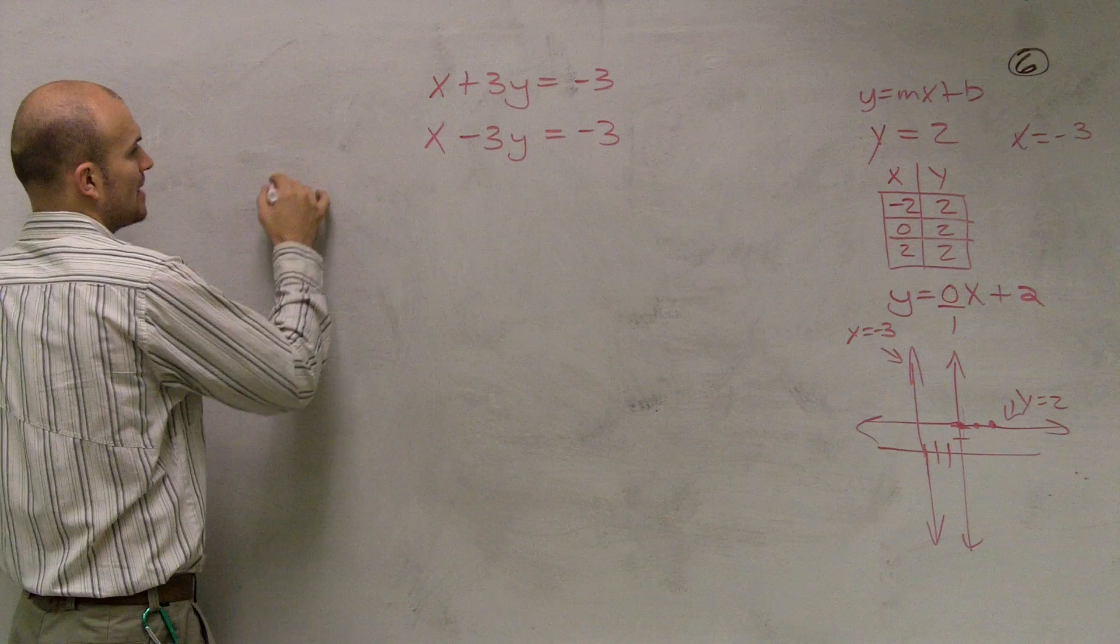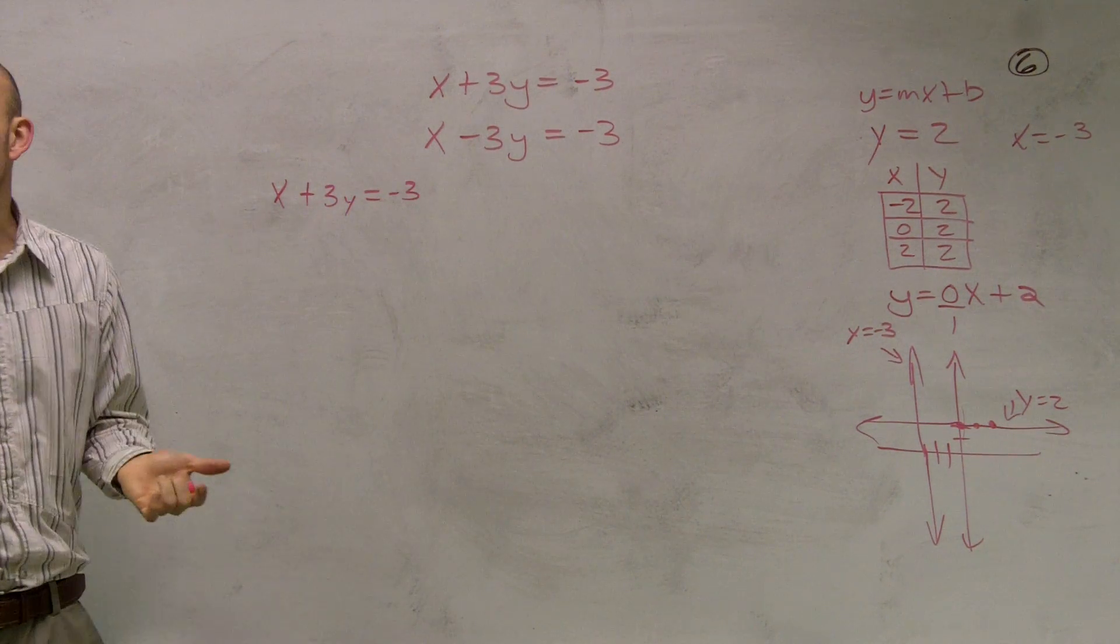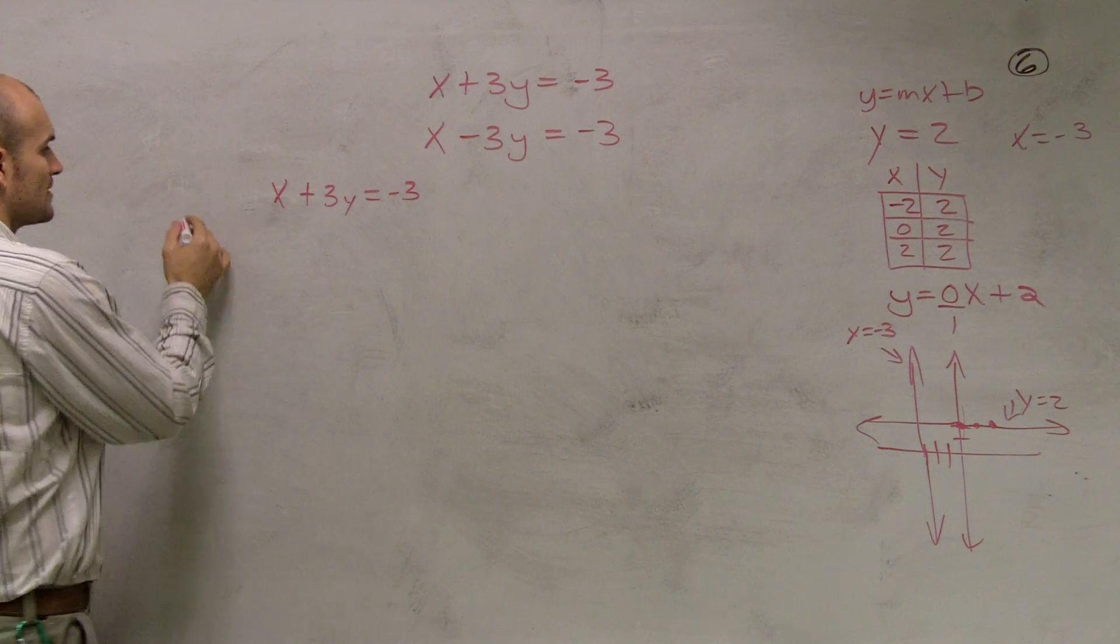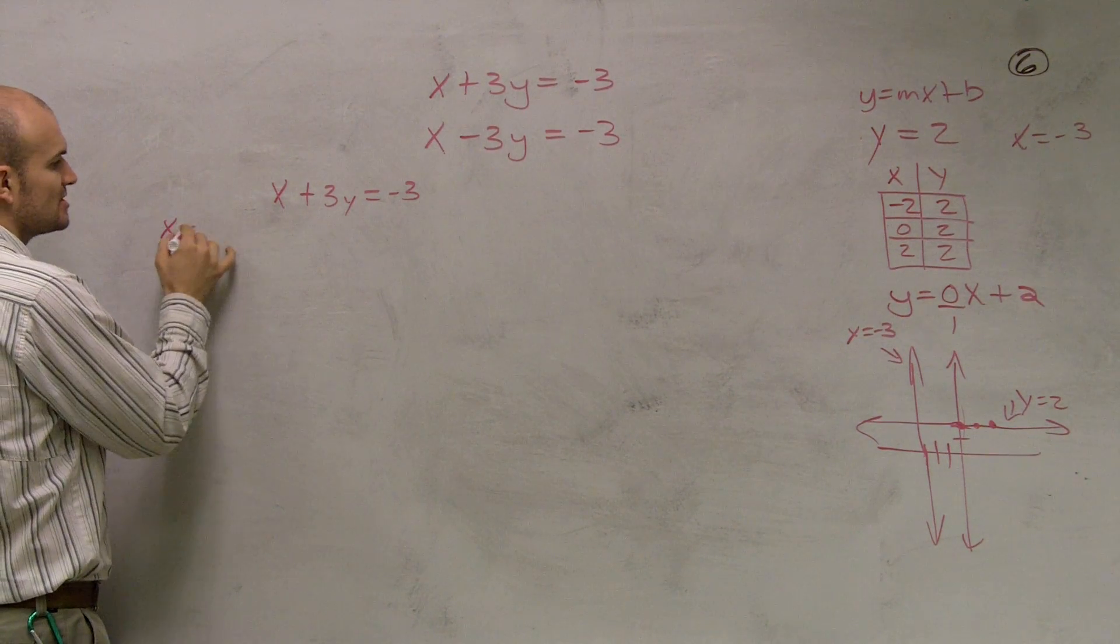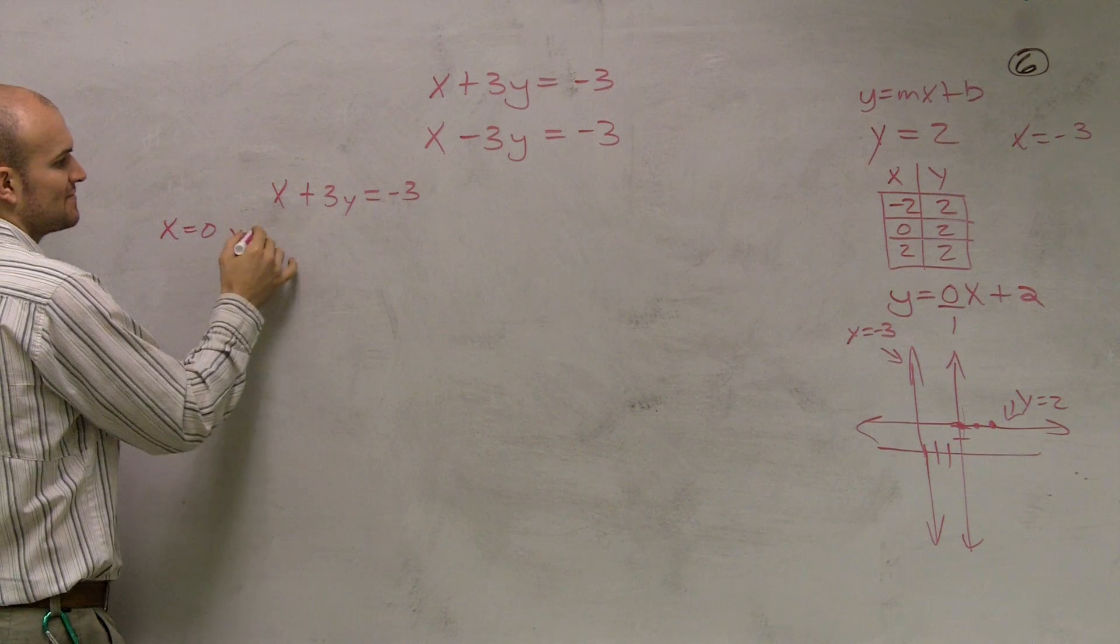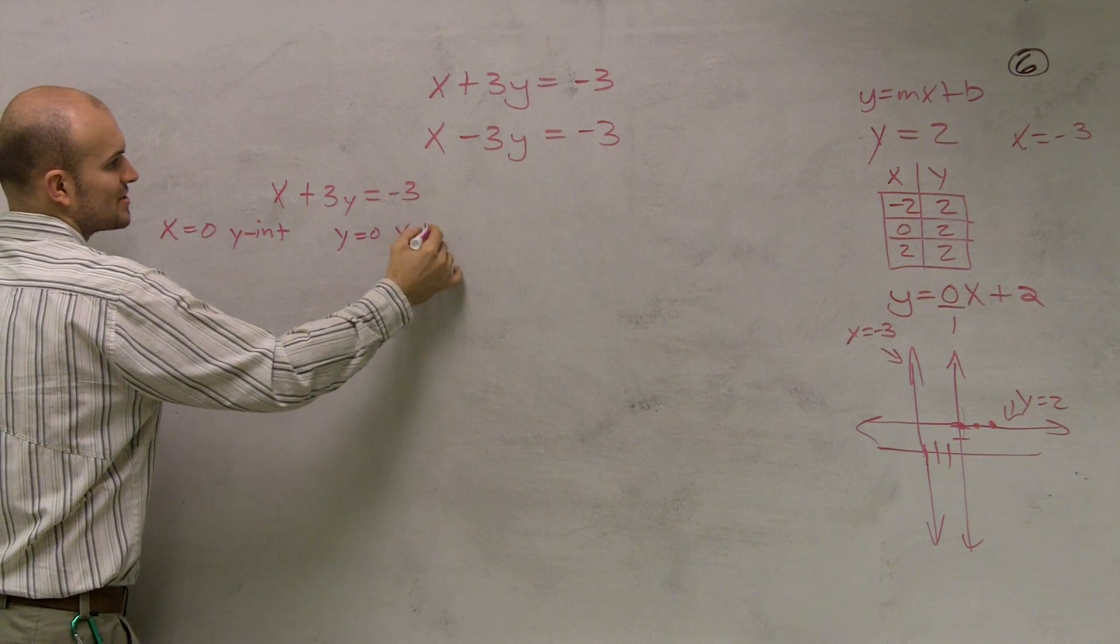So the first way I'm going to solve by the X and Y intercept method. For some of you, this might make more sense and you might like this method better. So remember that the X and Y intercept method: just have X equals zero for your Y intercept, and then do Y equals zero to find your X intercept.